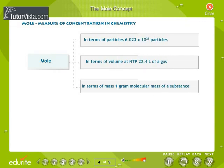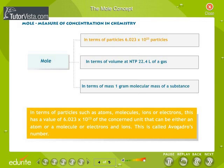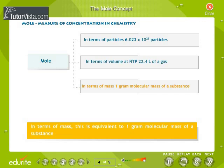The mole concept is a measure of concentration of substances in chemistry. The mole unit is based on the number of atoms in exactly 12 grams of pure carbon 12. In terms of particles such as atoms, molecules, ions or electrons, this has a value of 6.023 into 10 to the power 23 of the concerned unit that can be atom, molecule, electron or ion. This is called Avogadro's number. In terms of volume at normal temperature and pressure, this value is 22.4 liters of a given gas. In terms of mass, this is equivalent to 1 gram molecular mass of a substance.